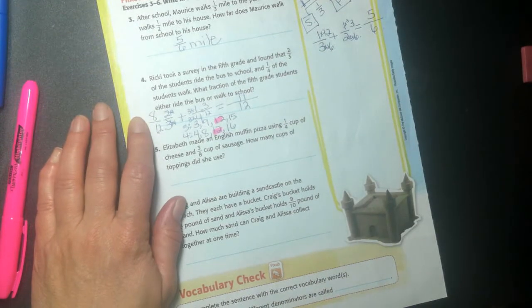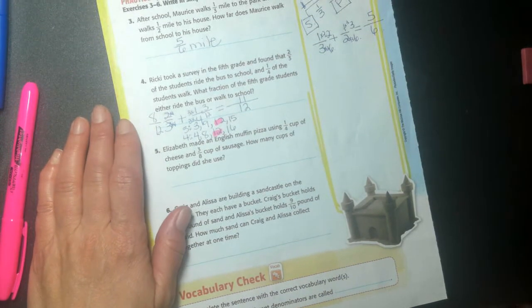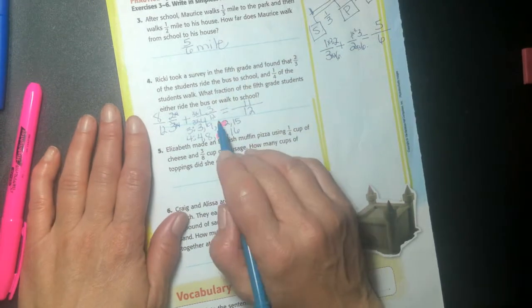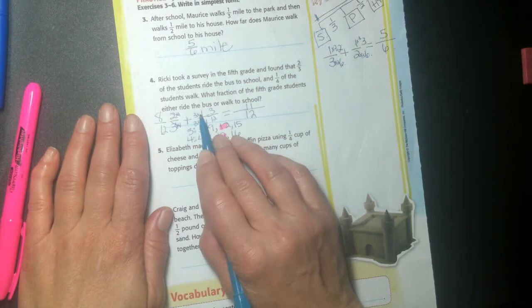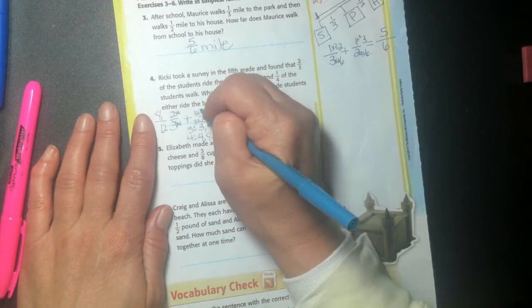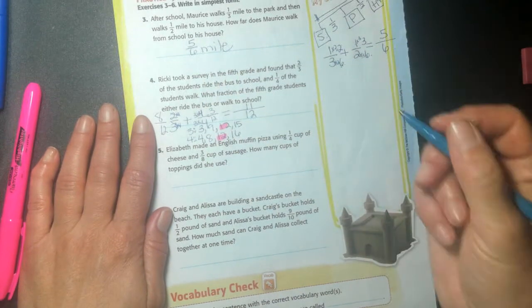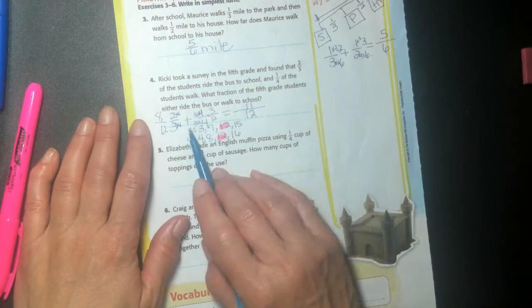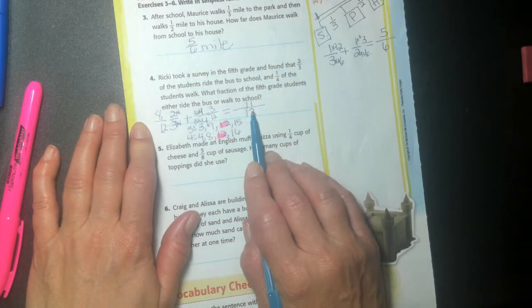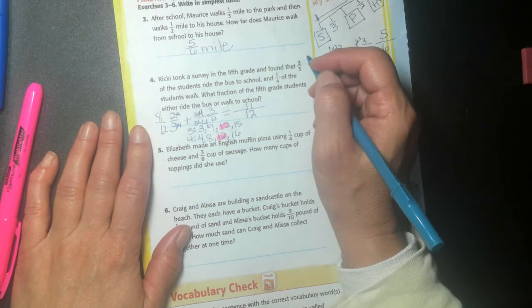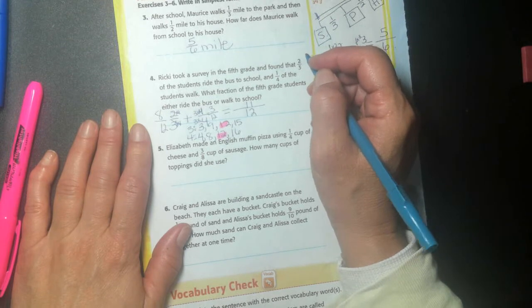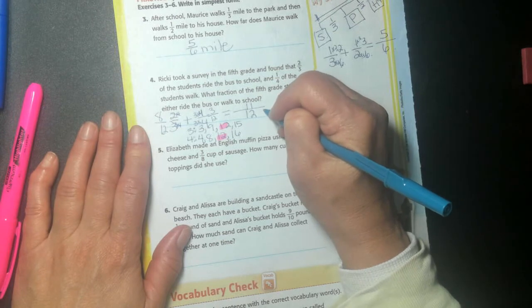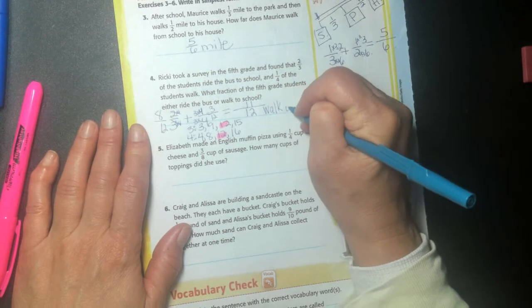He almost walks one whole mile. Or he walks. Oops. Oh my goodness. Hopefully you guys caught me what I did. I did three times four and then I did three times one. I broke my own rule. Whatever I do to the bottom, I have to do to the top. I'm just thinking about being done and my neck is hurting me. Sorry. I'm just, I don't know. So I did it right. I don't know what I'm tripping on. Okay. Eleven twelfths of the students either walk or ride. So I'm going to say eleven twelfths walk or ride.